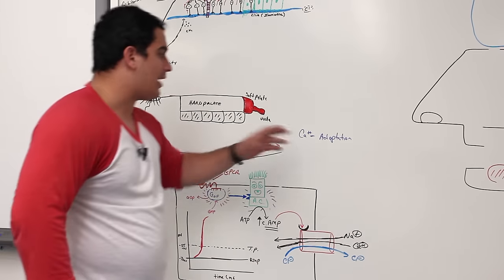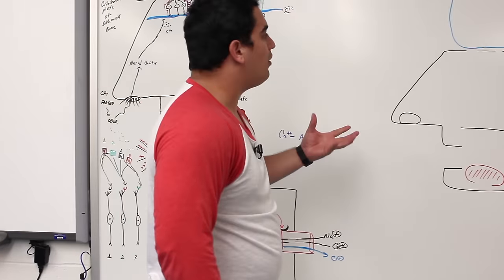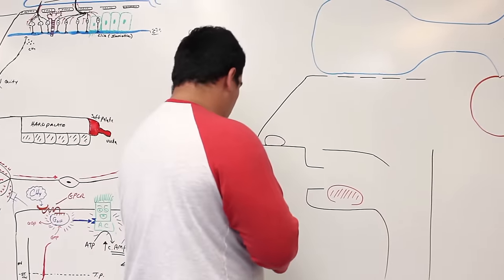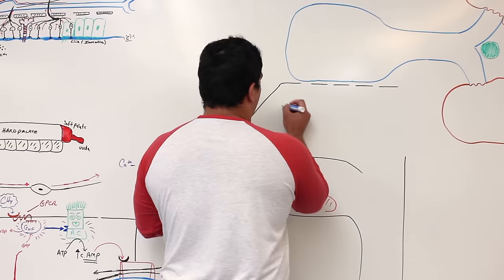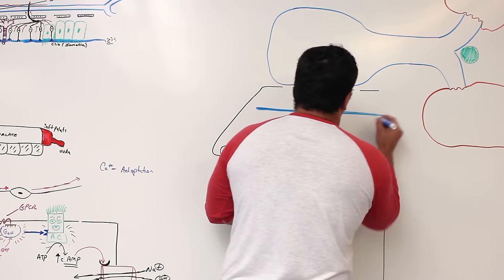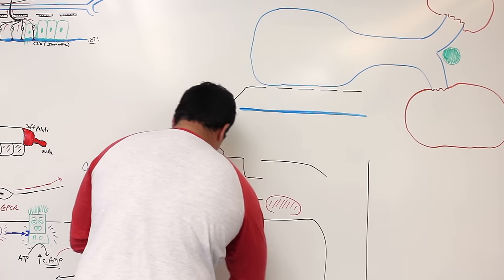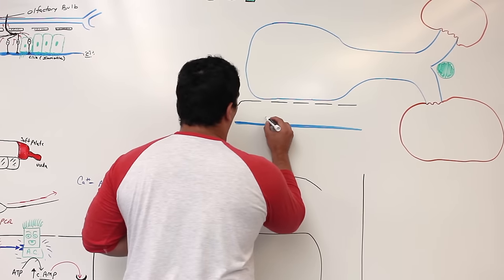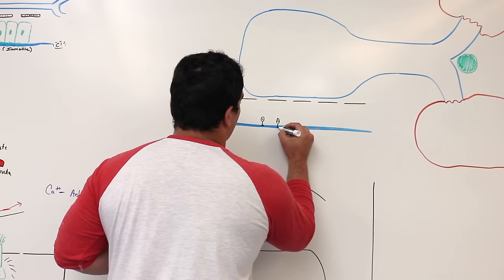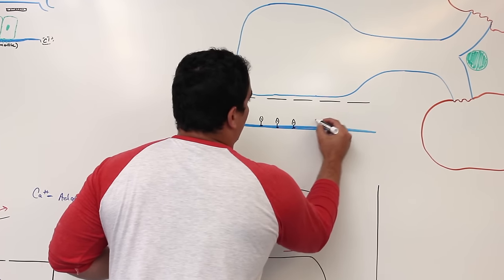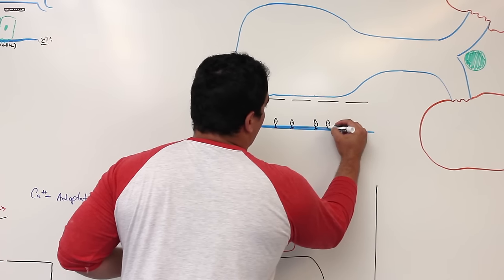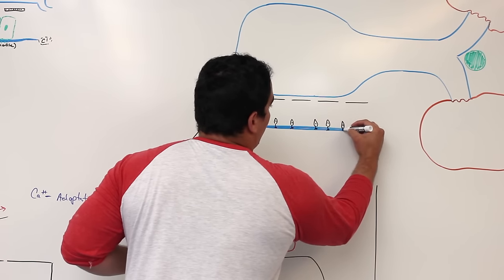Now that we've talked about adaptation, let's talk about how these action potentials are going to the cerebral cortex. We have the mucus layer here, and right below it are the bipolar neurons — specifically the olfactory neurons. The olfactory neurons have extensions that move into the mucus lining, and when they're activated they send action potentials.